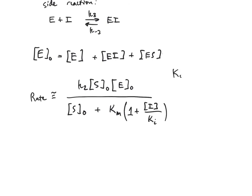So this Ki, by the way, is going to equal concentration of the enzyme, concentration of the inhibitor, divided by concentration of the enzyme-inhibitor complex. And that's also going to obey the detailed balance of the K3 and the K-3 rate constants.